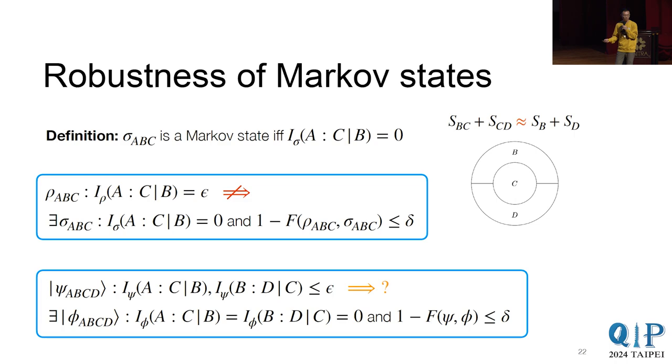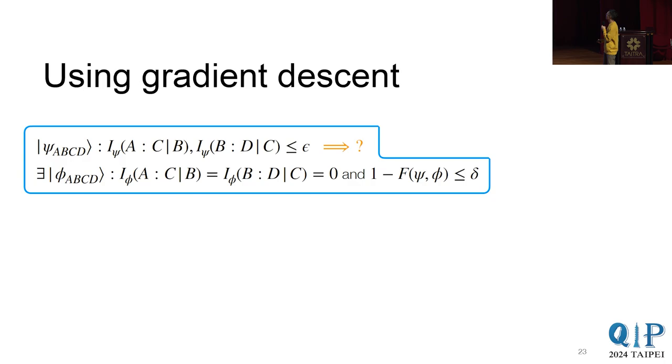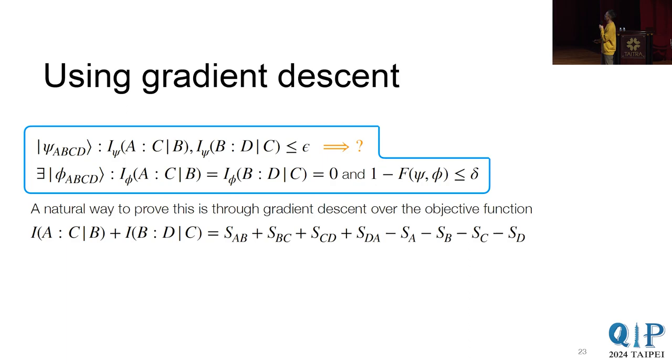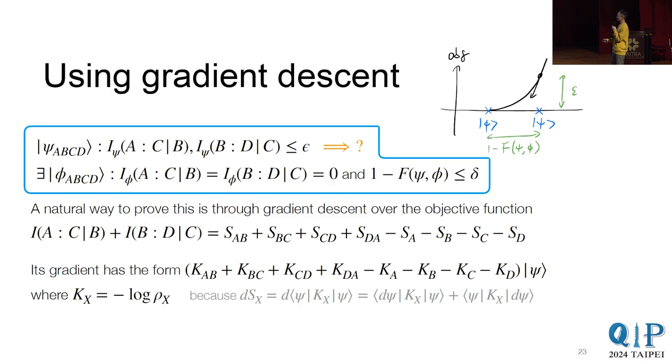So there could be different approach to this question. And here we'll just go through one of such approach. So, one challenge in proving such thing is that you have to find a candidate phi. One way to do so is to do gradient descent. And so, here we define this as our objective function, so we add both of these I's, and here's a picture of that. So here is the state psi, and then the hope is that after doing this gradient flow, you will end up with value zero, and that would give us a candidate for phi.